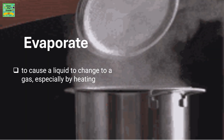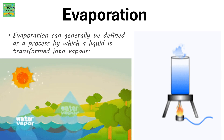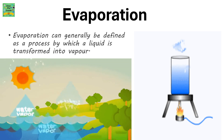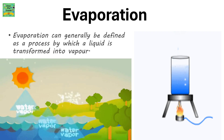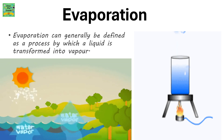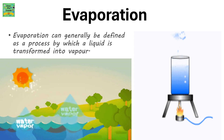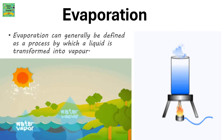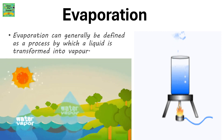Evaporate means to cause a liquid to change to a gas, especially by heating. Evaporation can generally be defined as a process by which a liquid is transformed into vapor. Evaporation is a form of vaporization that usually happens on the surface of liquids, and it involves the transition of the liquid particles into the gaseous phase. That is why this process is said to involve a change in the state of matter of liquids.